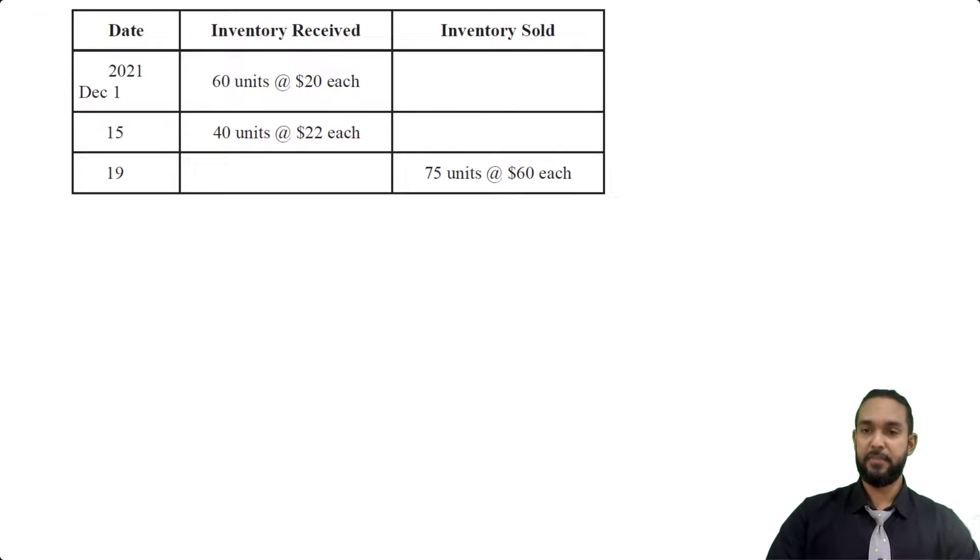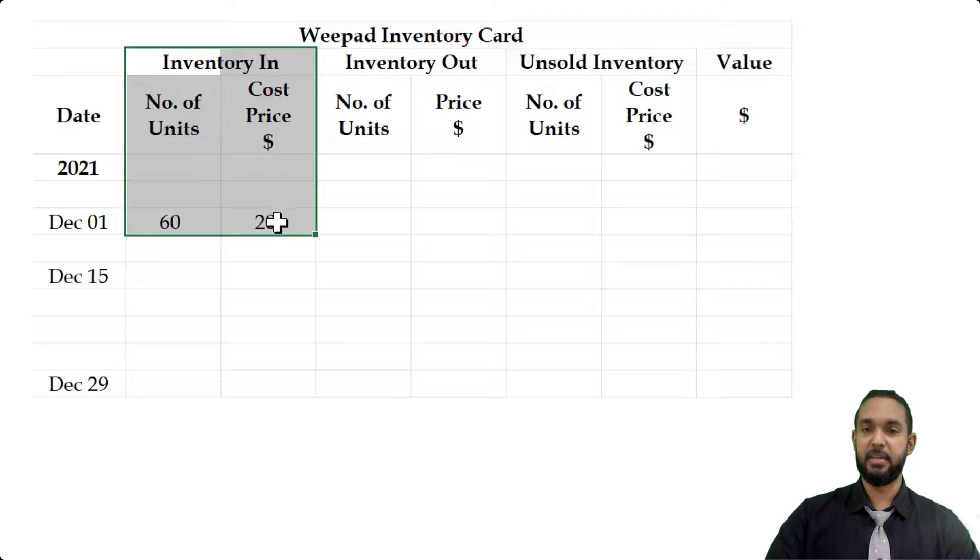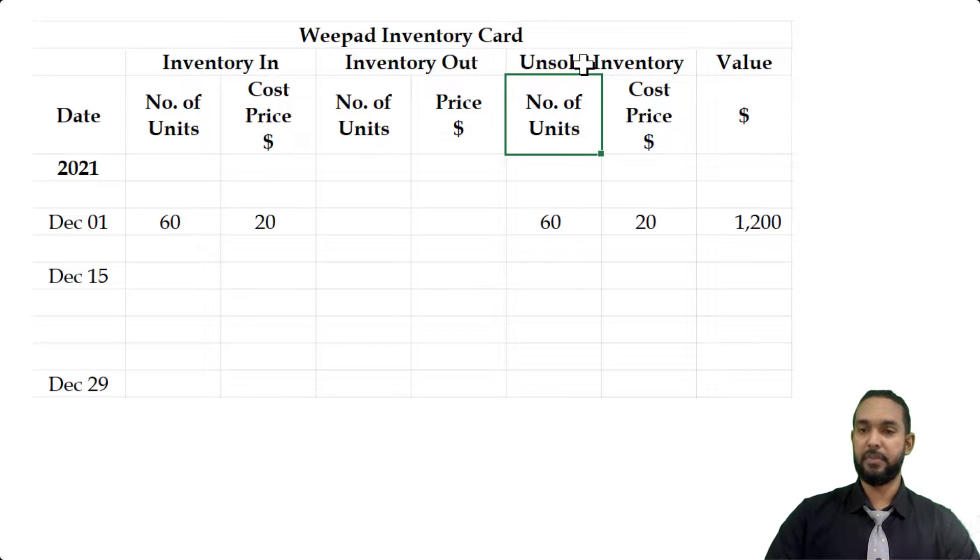So I've recreated the information across here, the table. So the first thing we're going to put in is the inventory received on December the 1st. 60 units at 20 each. So we're going to put that across here. Inventory in, number of units, 60. Cost price is 20. And we're also going to replicate that information across here. In the unsold inventory or balance at end, 60 units at 20 each, giving us a value of 1200.